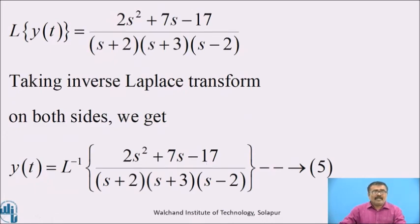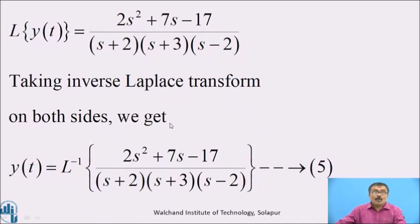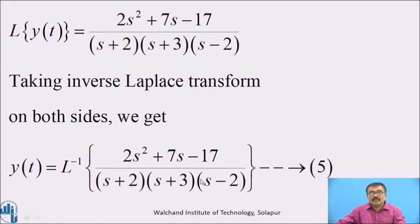Therefore, L{y(t)} = (2s² + 7s − 17) / [(s + 2)(s + 3)(s − 2)]. Taking the inverse Laplace transform on both sides, y(t) = L⁻¹{(2s² + 7s − 17) / [(s + 2)(s + 3)(s − 2)]}. Call this equation 5.